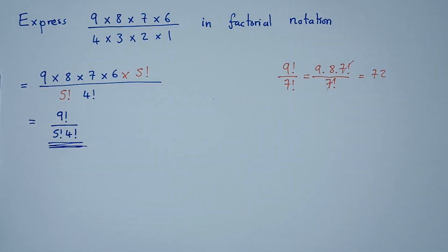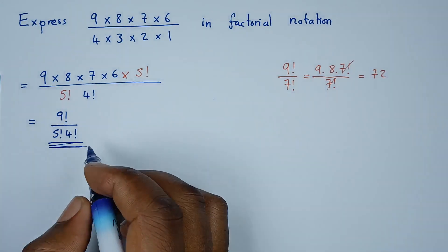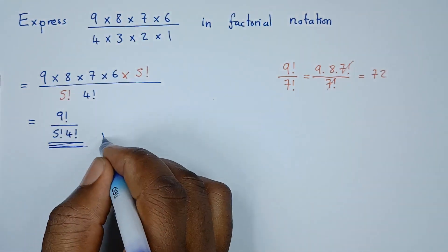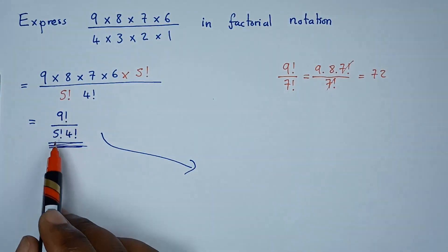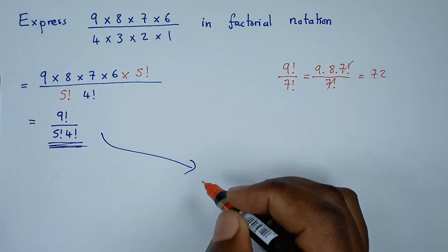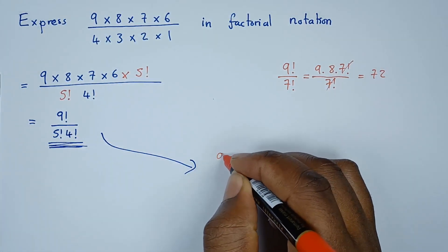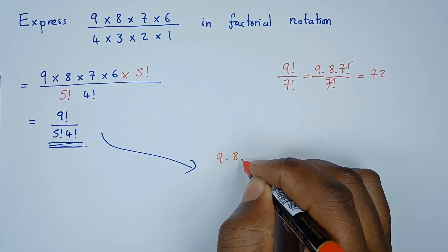Now let me do the reverse so that you understand it. So if I want to put this back into that form, this is what I'll do. I'll reduce 9 factorial to look like 5 factorial. So I'll say 9 factorial is the same as 9 times 8 times 7 times 6 times 5 factorial.